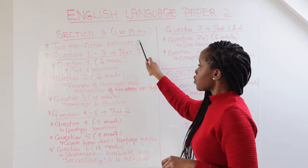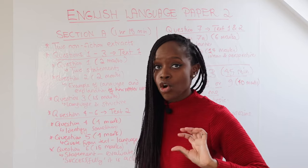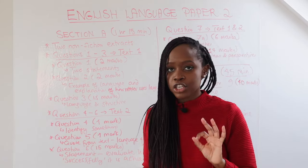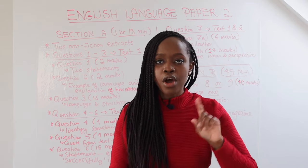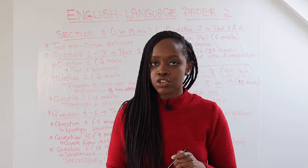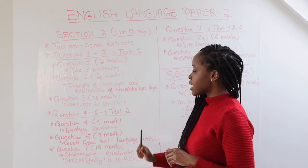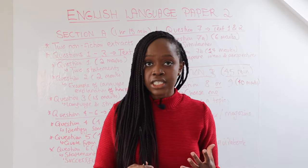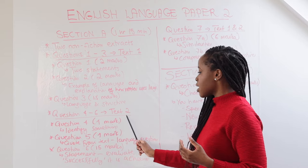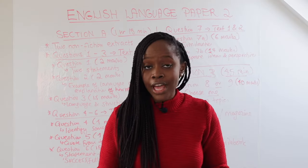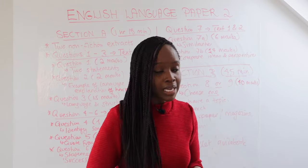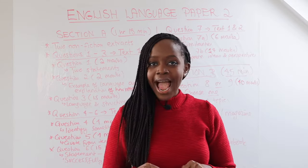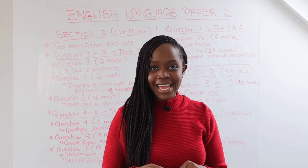When it comes to section A, I would recommend spending one hour fifteen minutes on this section. You will be presented with two non-fiction extracts, as opposed to English Language Paper 1 where you get one fiction extract. Questions one to three are answers relating to text one. Questions four to six relate to text two. Then question seven, split into seven A and seven B, are comparative questions where you compare both text one and text two.